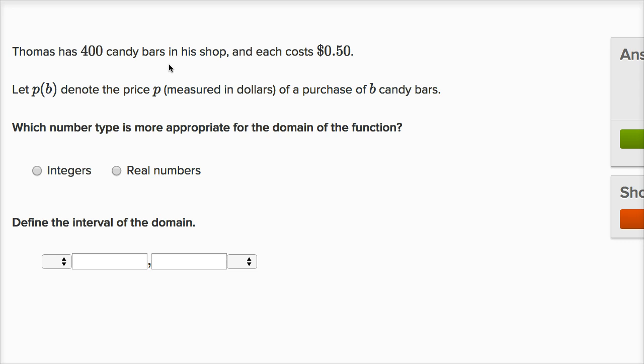So you're gonna buy zero, one, two, three, all the way up to 400. So I would say integers, that the domain of this function is going to be a subset of integers. You can't have all real number inputs.